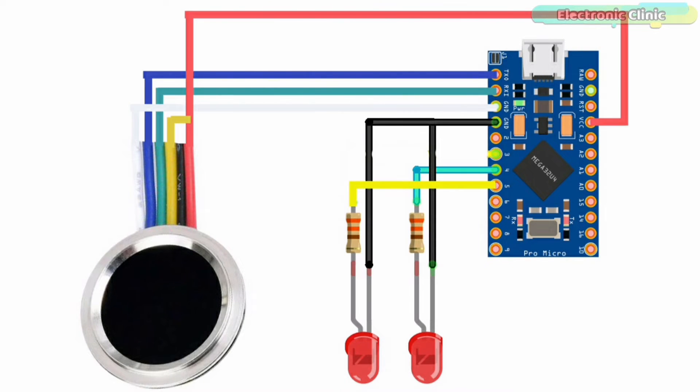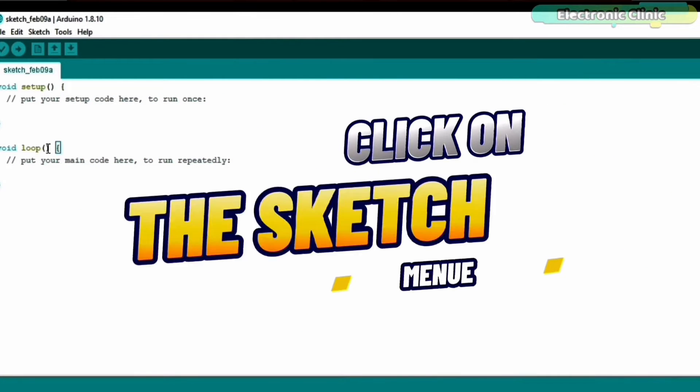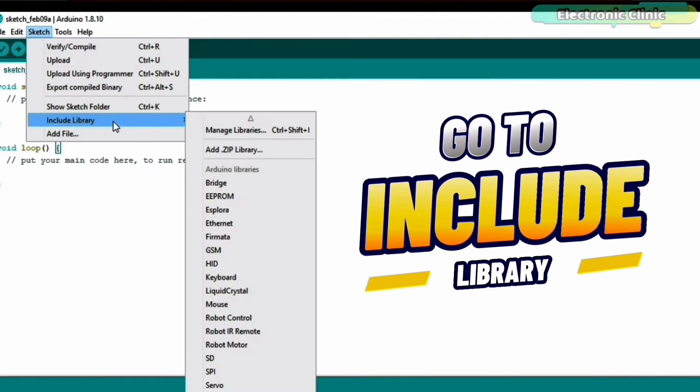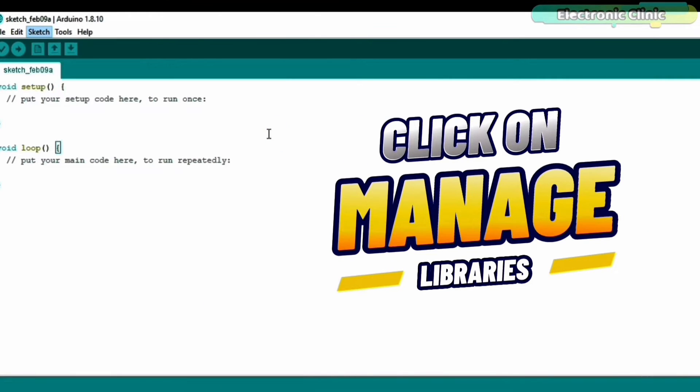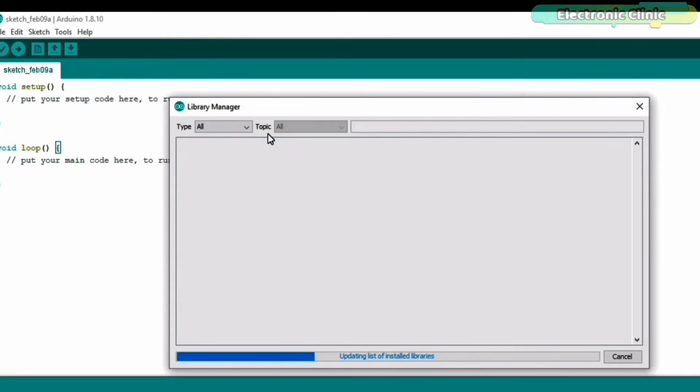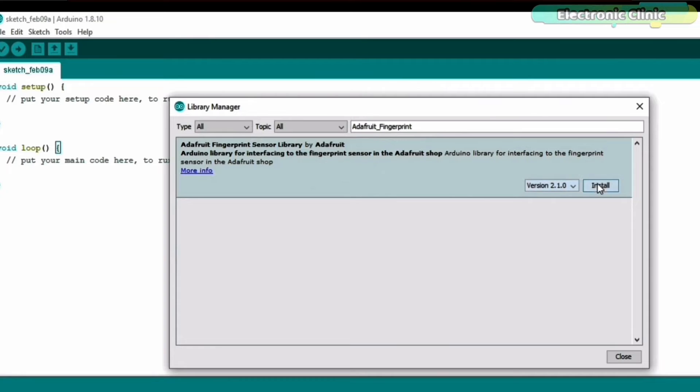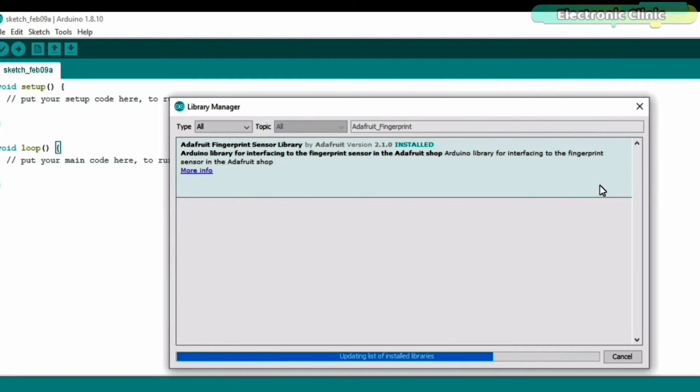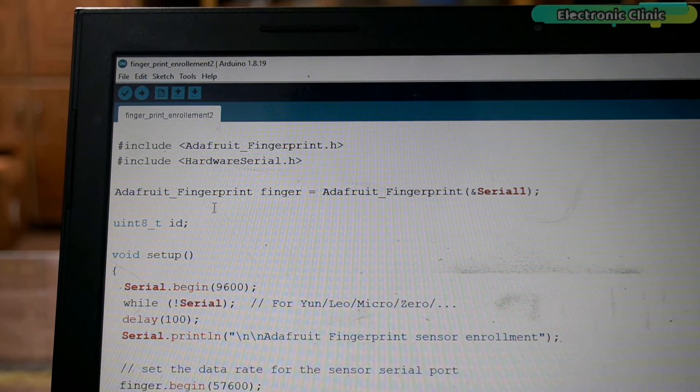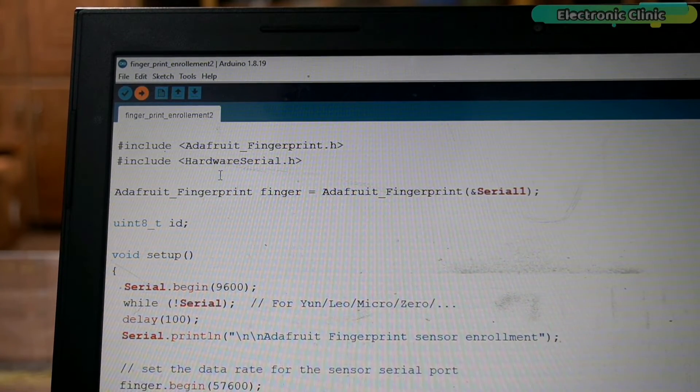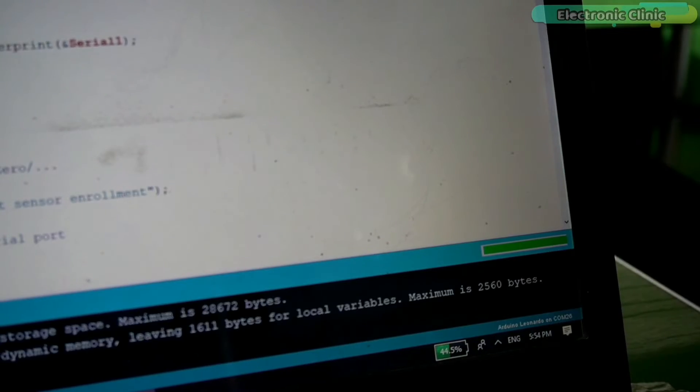Now let's go ahead and install the required libraries for the R557 fingerprint module. For this open the Arduino IDE, click on the Sketch menu, go to Include Library and then click on Manage Libraries. Search for Adafruit Fingerprint. Click on the install button. You can see my Adafruit fingerprint sensor library is now installed. Next for the fingerprint enrollment, connect your Arduino board with a laptop or PC and upload this sketch. You can download this code from our website electronicclinic.com. You can see the code has been uploaded.